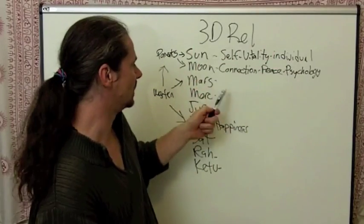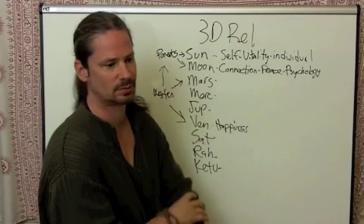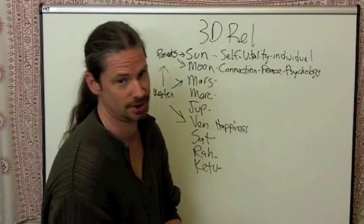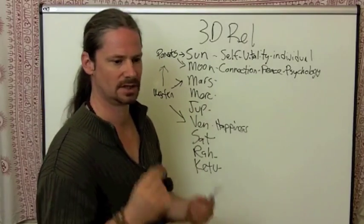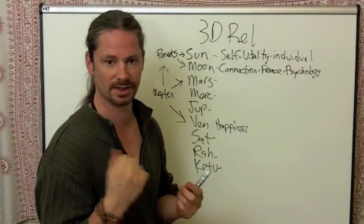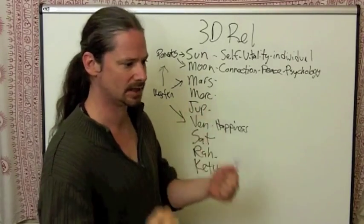So in relationships, you see that. Mars, in relationships, is probably the most disruptive planet for relationships. Because Mars is not a family man. In the scriptures, Mars is a yogi. Mars is like the independent yogi. Or the warrior.